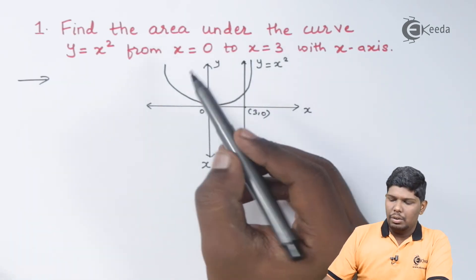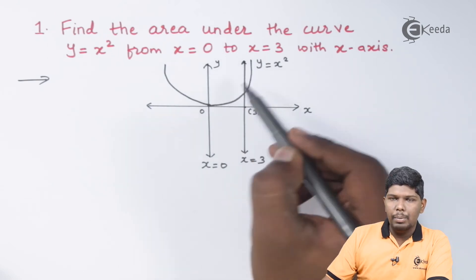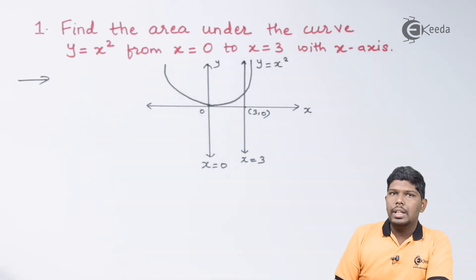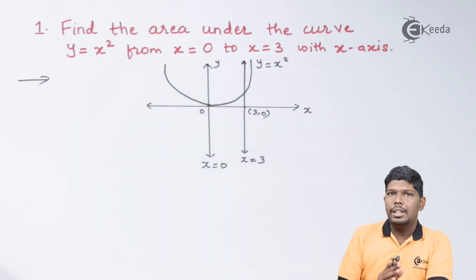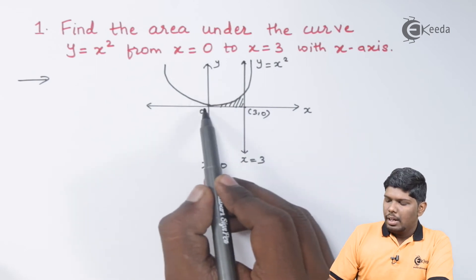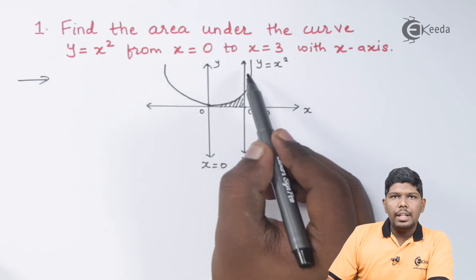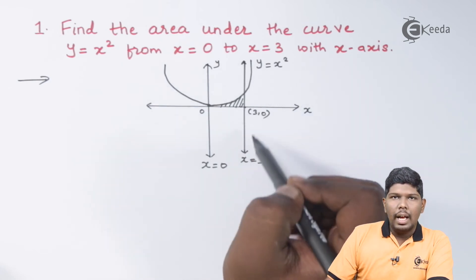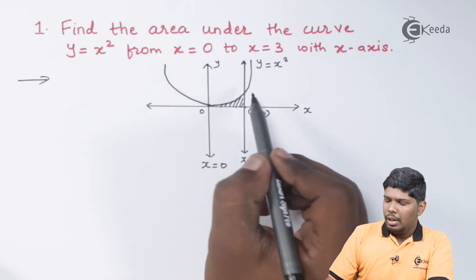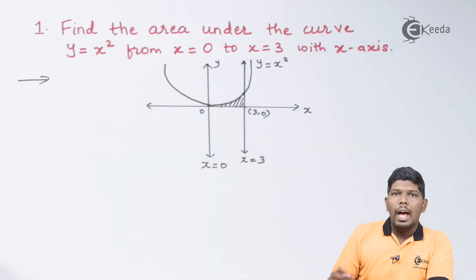The question asks to find the area under the curve — that is, below the parabola — from x = 0 to x = 3 with respect to the x-axis. We need to select the region bounded by the x-axis, the line x = 0, the line x = 3, and the parabola y = x². Each of these contributes to the shaded area, as shown in the diagram.